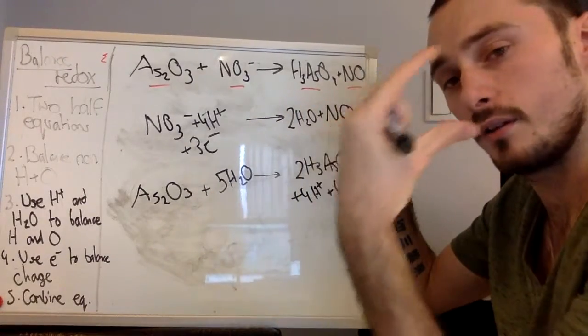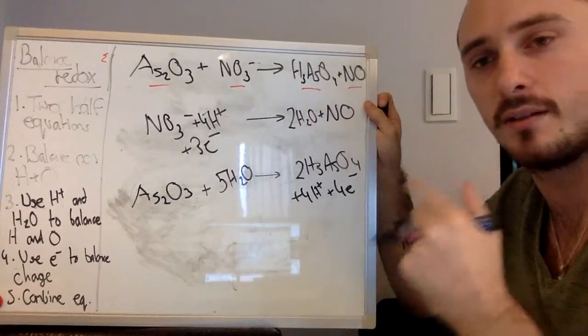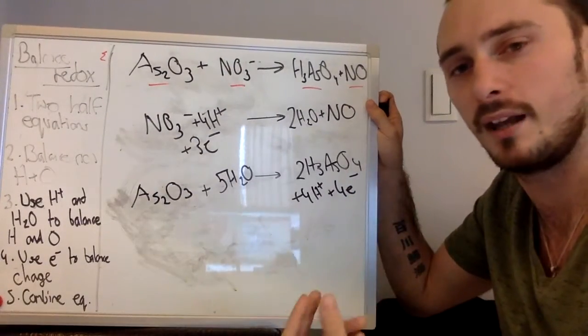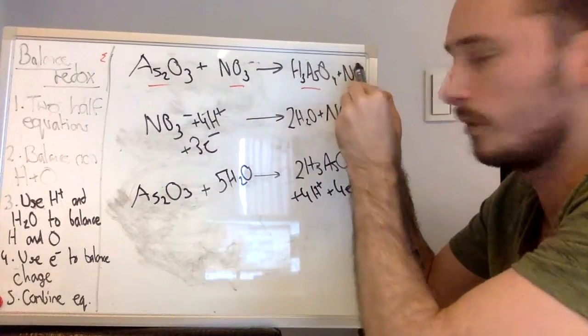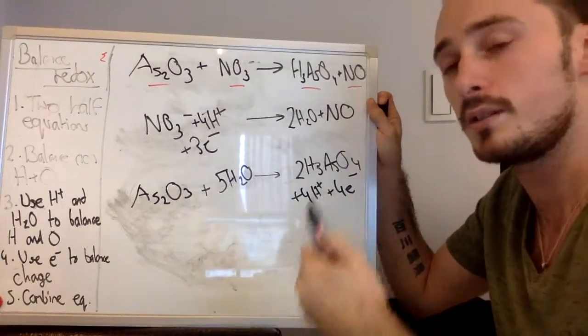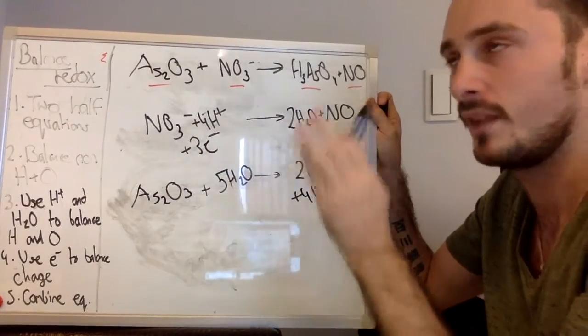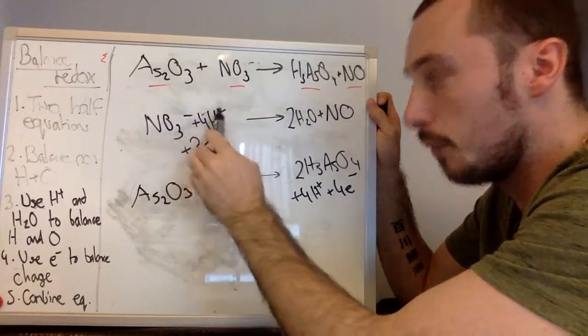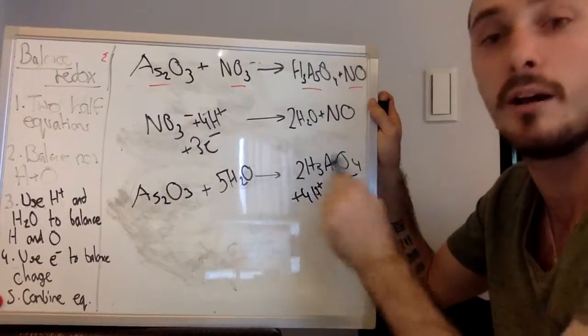Because what we need to do now is combine these two half equations back into one whole equation. But we do need the electrons, the amount of electrons to cancel out. The movement of electrons is effectively the chemical reaction that's happening here. If we go back up to the top, you can see that you have something which is charged becoming something which is not charged. So the thing which is moving or changing is electrons. We want to balance the number of electrons.